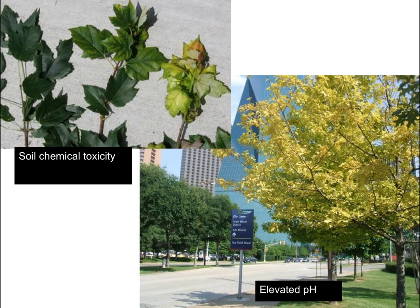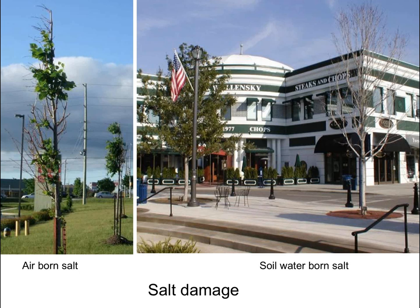Leaf color will often tell us about different kinds of soil toxicity problems. There are books, including one by Larry Costello, that show good photographs of tree leaves with different kinds of soil toxicity problems.